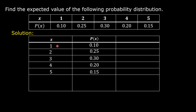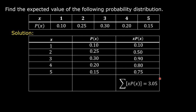In the third column, multiply the values of x by the corresponding probabilities: 1 times 0.10 is 0.10; 2 times 0.25 is 0.50; 3 times 0.30 is 0.90; 4 times 0.20 is 0.80; 5 times 0.15 is 0.75. Then add. The sum of x times P(x) is equal to 3.05.